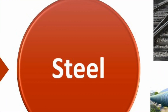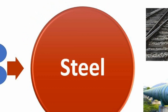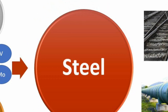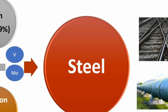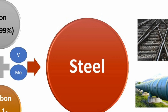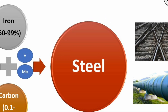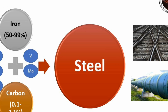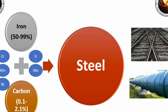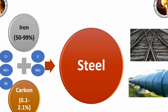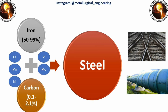Next is steel. It is an iron-based alloy and carbon, chromium, manganese, vanadium, and molybdenum are the main alloying elements. The composition of steel is 50 to 99 percent iron and 0.1 to 2.1 percent carbon. It is used in structures, cutlery, car bodies, and rails.